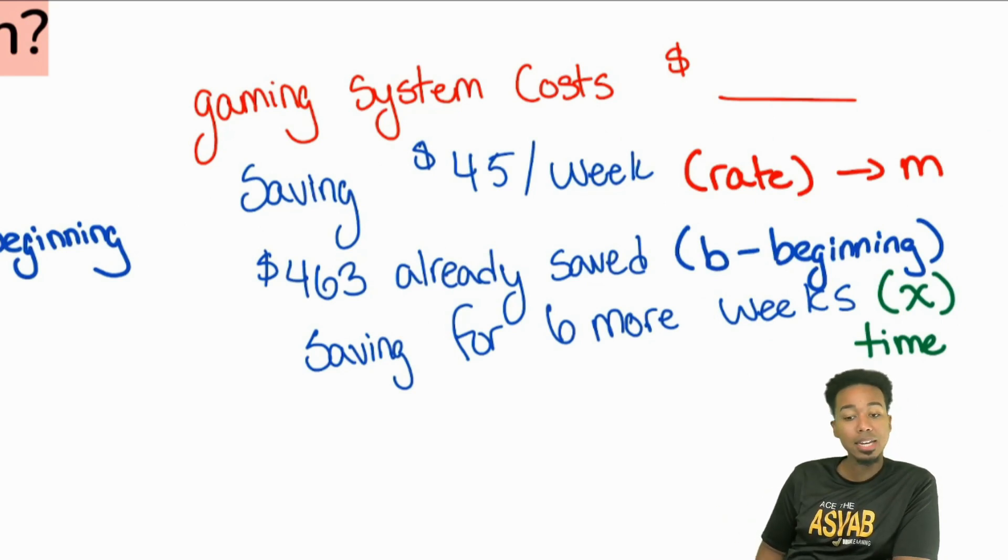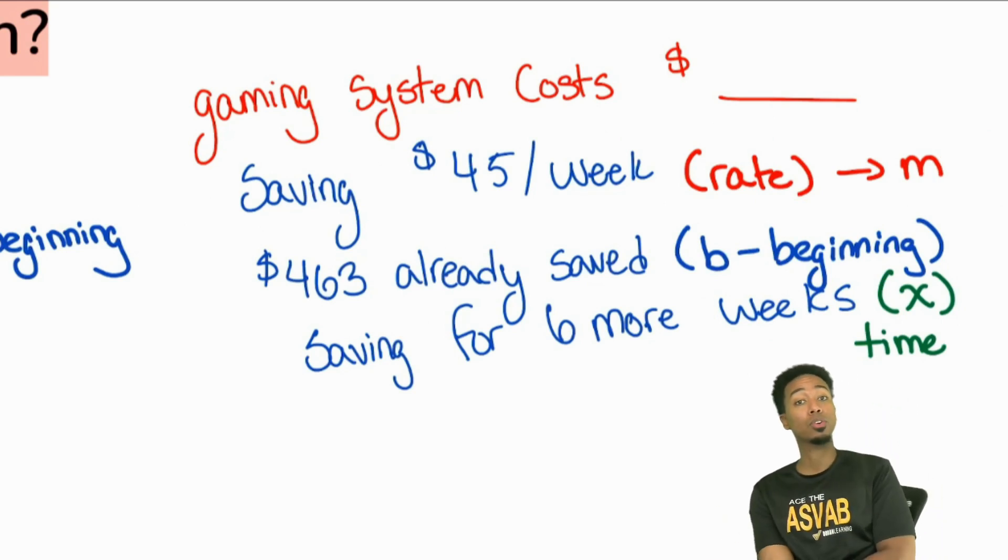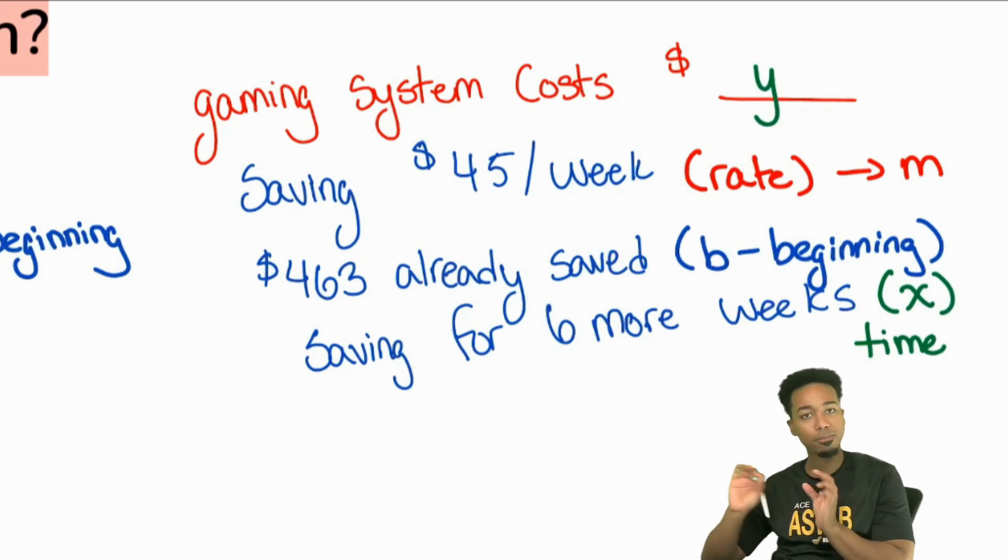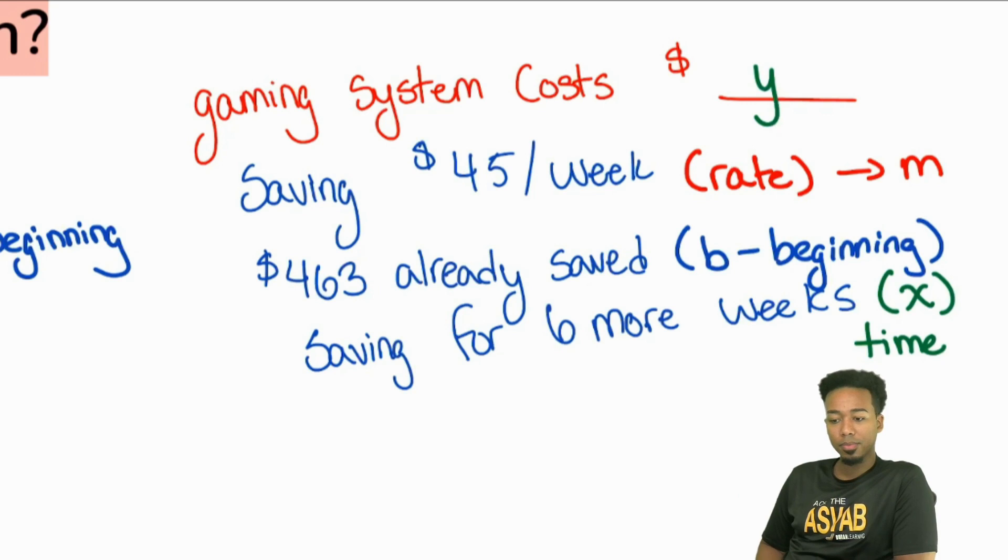And so lastly, everybody, if we're looking for the grand total, how much the gaming system costs, what's that going to be? Yeah, that's your end result. That's the why. That's the grand total after you're done saving for six weeks. So everybody, do you see how this can actually be quite methodical going from the beginning, picking apart the information?